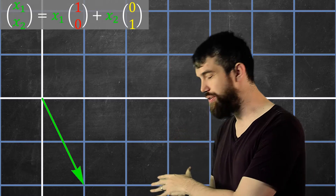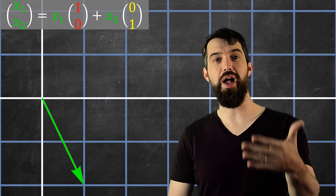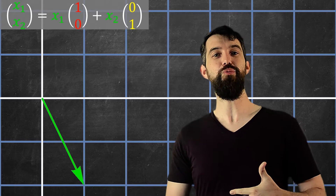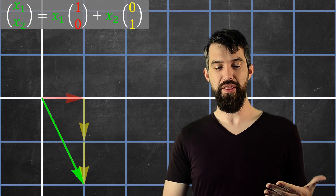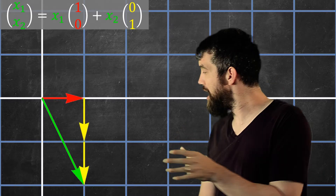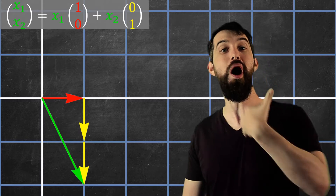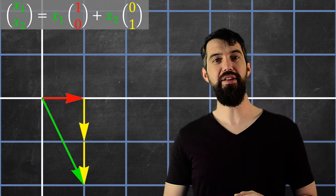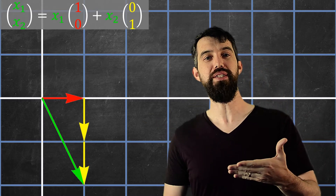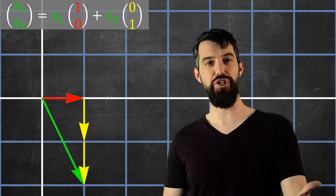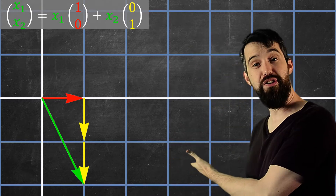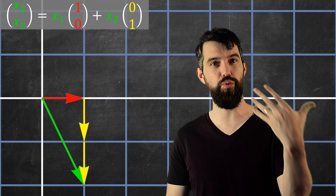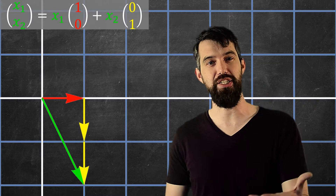The green vector — 1 to the right and 2 down — can be written as a linear combination where x1 is just 1: you take one copy of 1, 0, that's the red vector. And x2 is minus 2: you take the standard basis vector pointing straight up and take two copies going down, so that's why we have a minus 2.